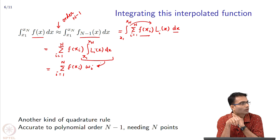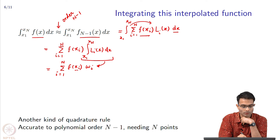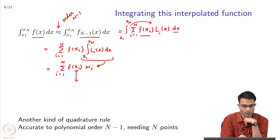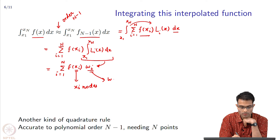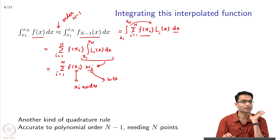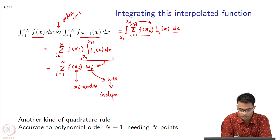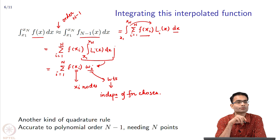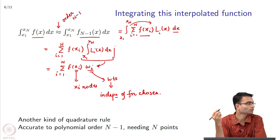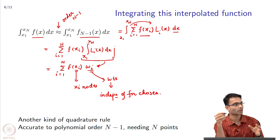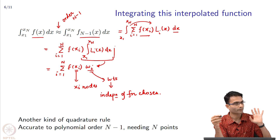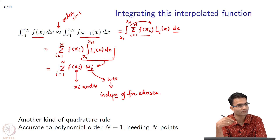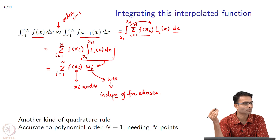Would you call what we have done a quadrature rule? Yes — it is a quadrature rule because it gives an approximation of the integral using function values at a few discrete points, the x i nodes, and weights that do not depend on the function chosen. Another advantage is that these weights w i can be precomputed and stored as a table. In fact, many mathematical libraries provide values of w for various intervals. So when you get a function to integrate, all you need to do is evaluate the function at the nodes and multiply by the precomputed weights.